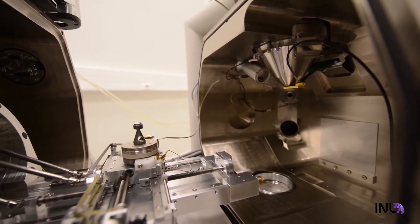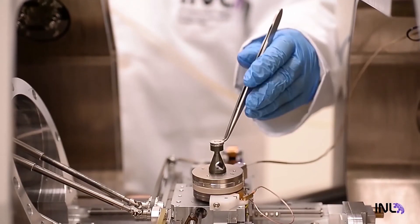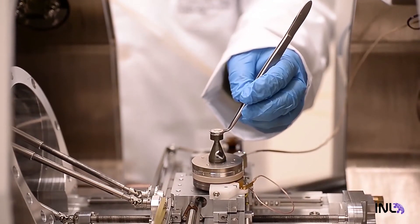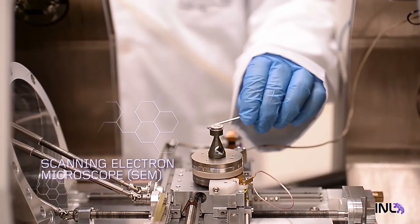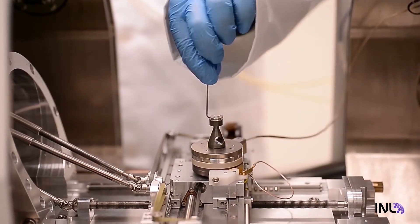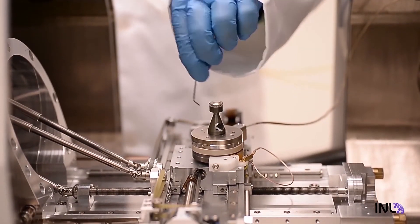To obtain SEM images, particles are placed onto special supports and loaded into the microscope. A special moving stage is then used to precisely orient and position the samples for imaging.